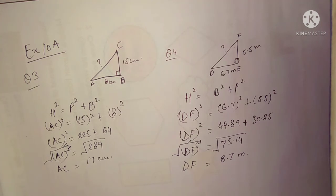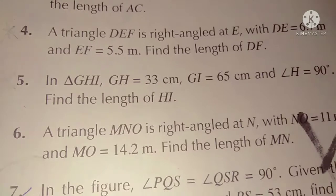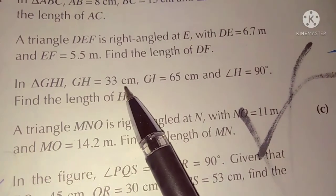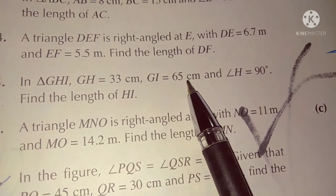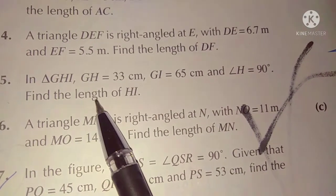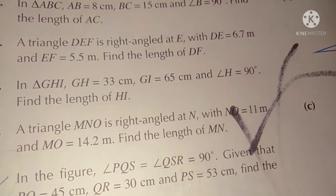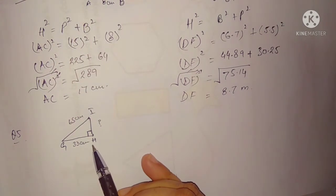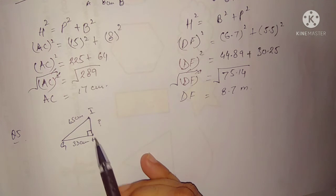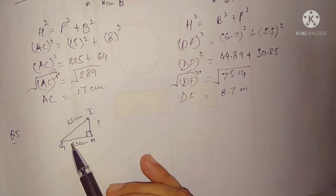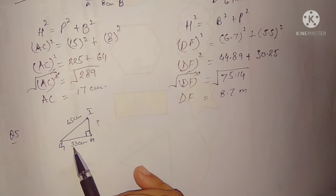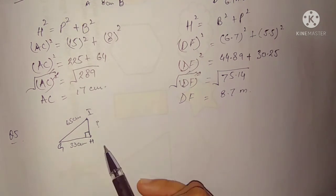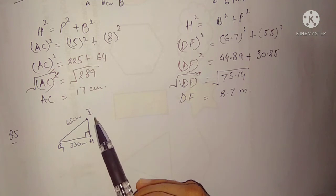Question number five: in triangle GHI, GH is equal to 33 cm, GI is equal to 65 cm, and angle H is equal to 90 degrees. Find the length of HI. Angle H is 90 degrees, so this is G and this is I. GH is 33 cm, GI is 65 cm, and you have to find the perpendicular, which is HI.